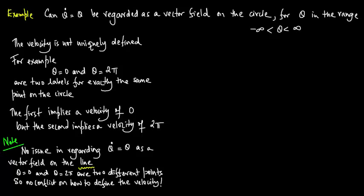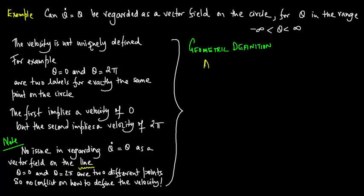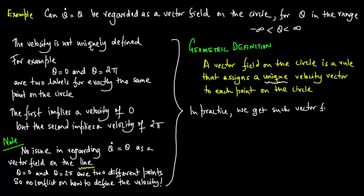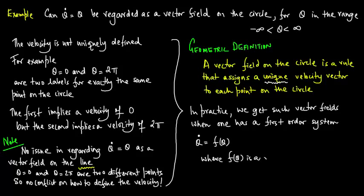So, we now go ahead and offer a geometric definition. A vector field on the circle is a rule that assigns a unique velocity vector to each point on the circle. In practice, we get such vector fields when one has a first-order system theta-dot is equal to f of theta, where f of theta is a real-valued two-pi periodic function.